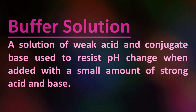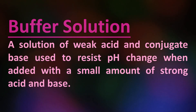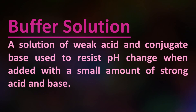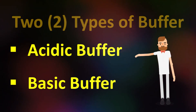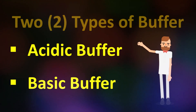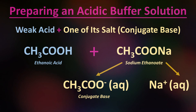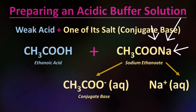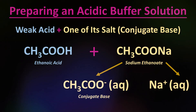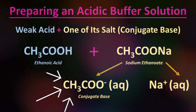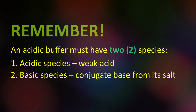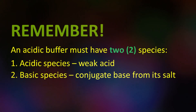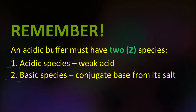Buffer solution is a solution with weak acid and base that can resist pH change when we add a small amount of acid or base into it. There are two types of buffer — acidic or basic. To prepare an acidic buffer solution, we add a weak acid and one of its salts. For example, ethanoic acid and sodium ethanoate. Sodium ethanoate will dissociate to produce the ethanoate ion, which is the conjugate base. Every buffer must have two species: one acidic species from the weak acid, and one basic species from the salt.